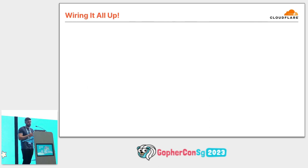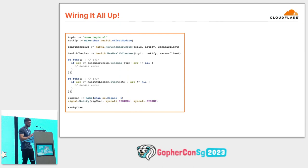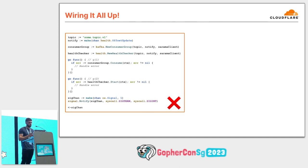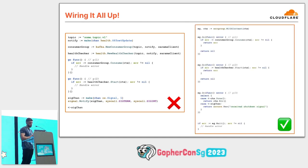Now that we have our health checker and consumer code written, we need to link it all up. One way is to initialize objects and use Go funcs to spin up Go routines with the channel, with the main Go routine listening to termination signals. However, this isn't the best approach — we're firing and forgetting about the Go routines without tracking their lifecycle, which gives us very little visibility. A Go routine should never be started without knowing when or how it will be stopped. Instead, when running multiple Go routines in parallel and waiting for outcomes, you should use either an error group or a wait group.